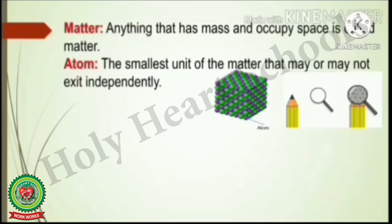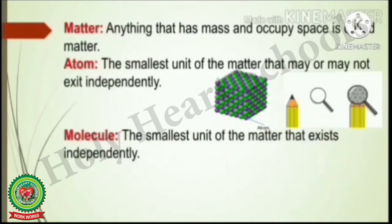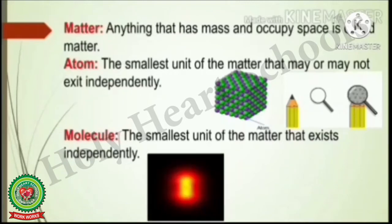How can we define an atom? The smallest unit of matter that may or may not exist independently. When we say it may or may not exist independently, there are certain atoms that can exist alone, but there are certain atoms that cannot exist independently — they combine with other atoms and form molecules. A molecule is defined as the smallest unit of matter that exists independently.